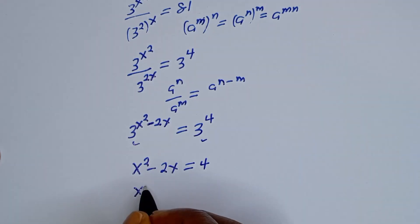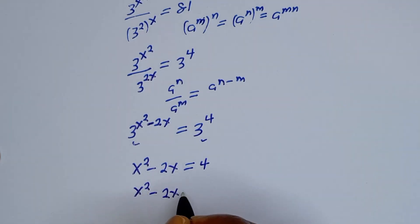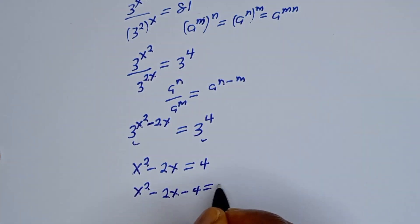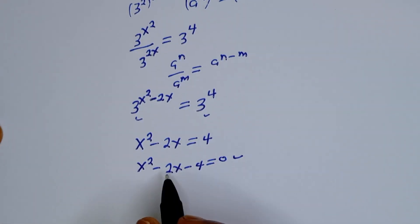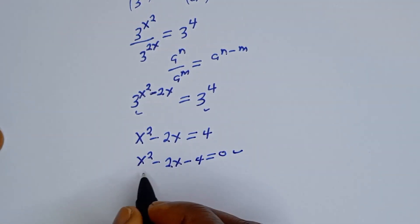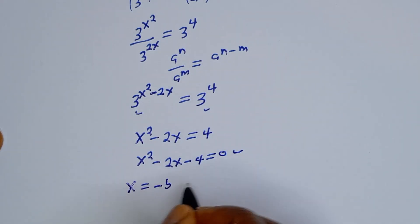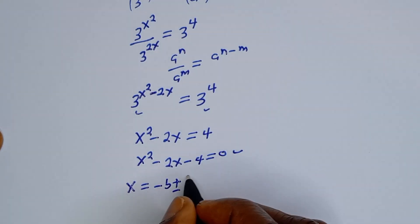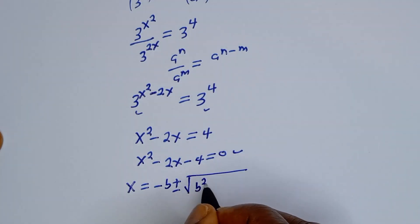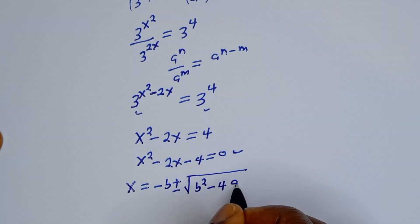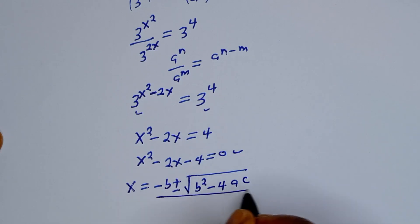Then x squared minus 2x minus 4 is equal to 0. This is a quadratic equation which can be solved using the quadratic formula: x is equal to negative b plus or minus square root of b squared minus 4ac, all over 2a.